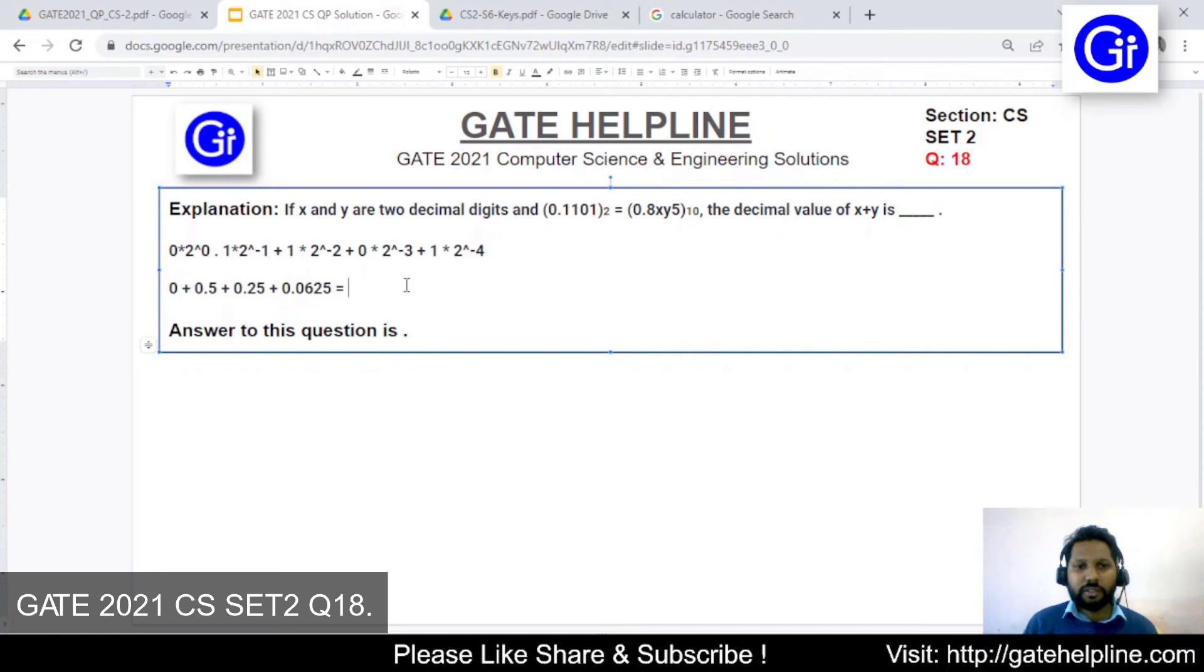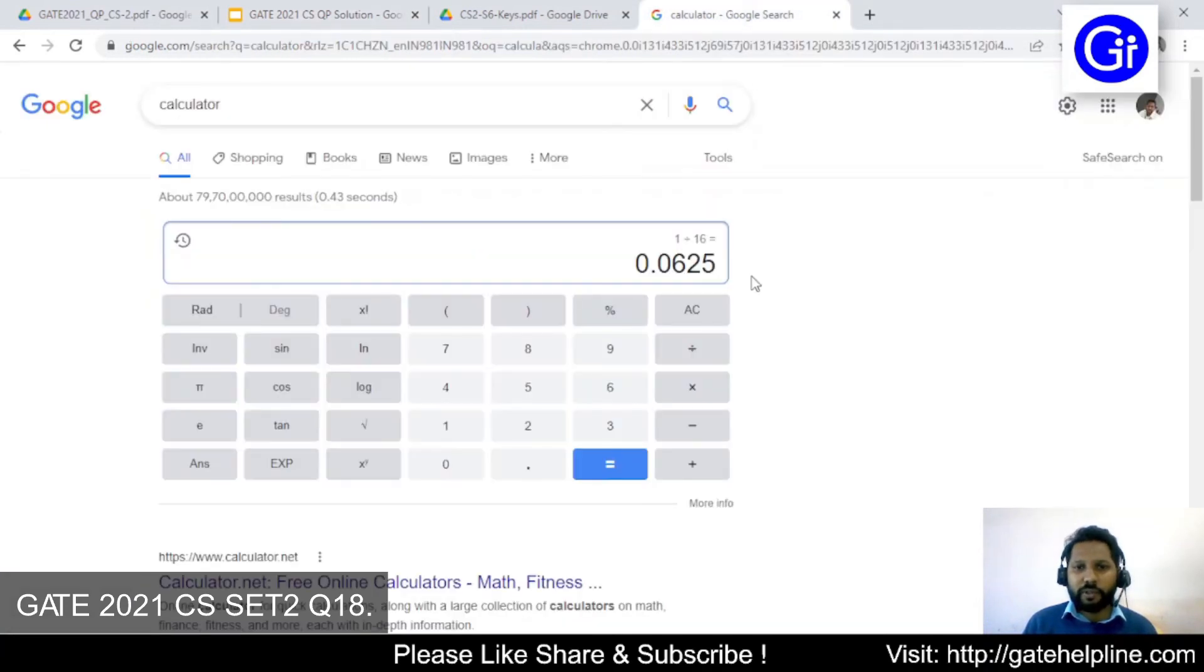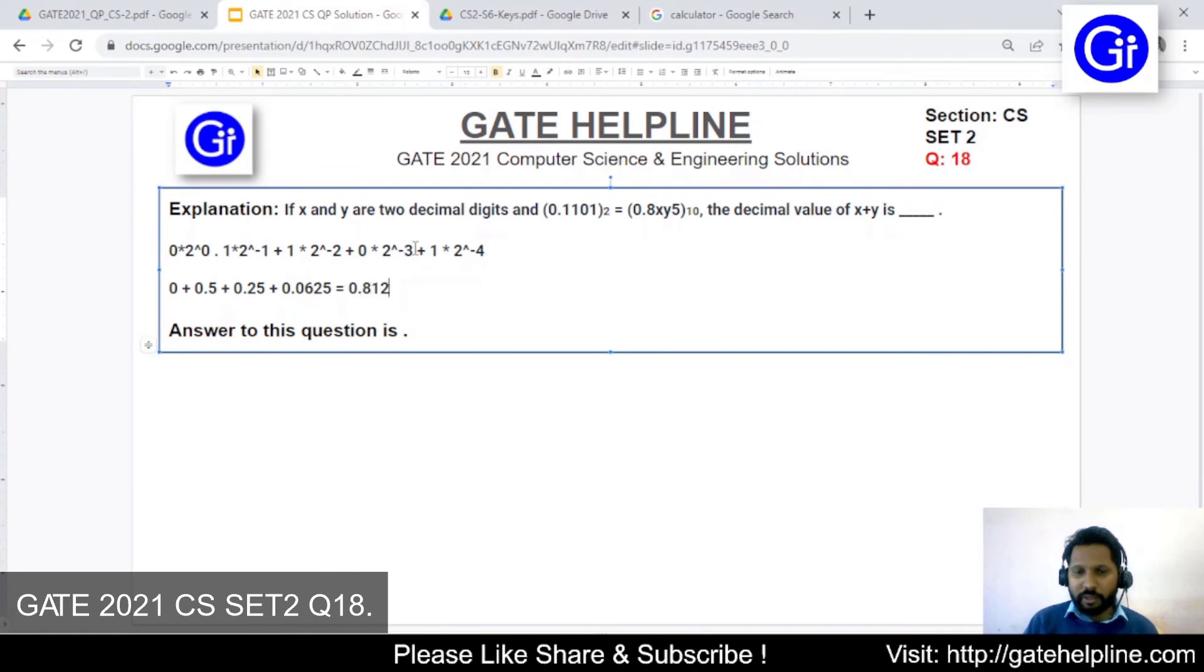Now we just want to know the sum of these values. 0.0625 we already have in calculator, so we will sum up 0.5 and 0.25 with this number. It will be plus 0.5 plus 0.25. The resulting answer is 0.8125. So we will write it here, 0.8125.